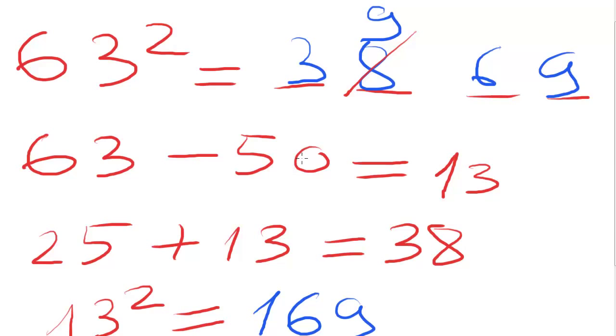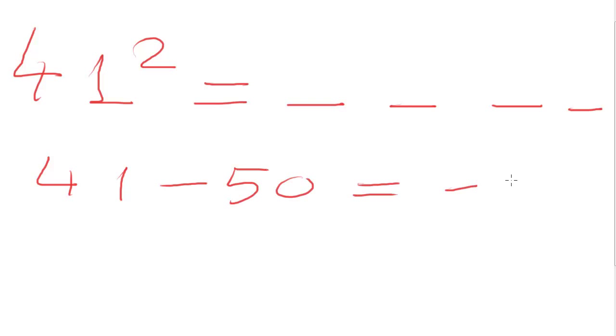Let's take the last example: 41 square root. Again, calculate 4 digits. But 41 is less than 50. Make the difference. The result is minus 9. Now, make the addition between 25 and minus 9. The result is 16, and these are the first two digits.